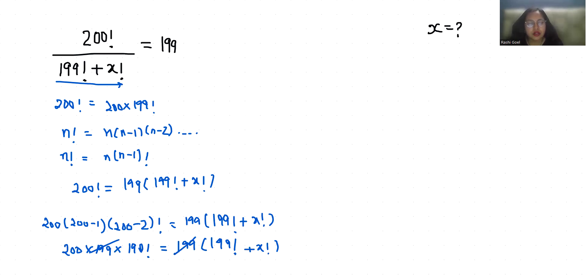So 200 times 198 factorial equals 199 factorial plus x factorial. Now 200 times 198 factorial minus 199, which I can write as 199 times 198 factorial, equals x factorial.